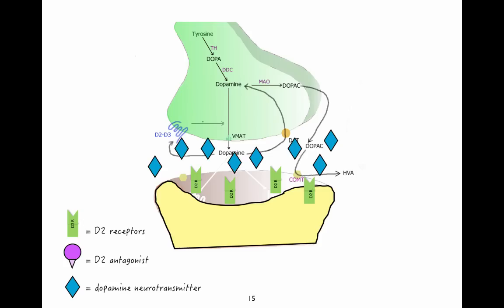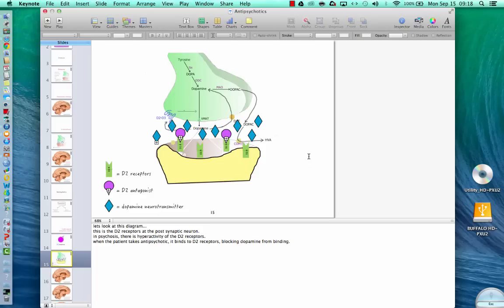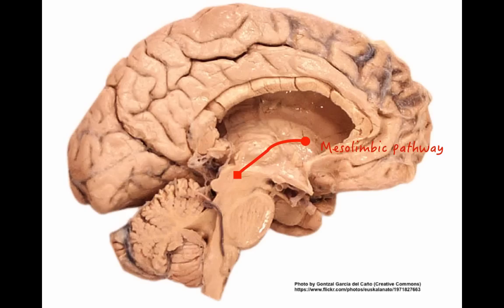Let's look at this diagram. These are the D2 receptors at the post-synaptic neuron — those are the light green squares. In psychosis, there is hyperactivity of dopamine, as you can see in the blue diamonds in the synaptic cleft. So when the patient takes an antipsychotic, it binds to the D2 receptors, blocking dopamine from binding to them. When that happens in the mesolimbic pathway, it would reduce the positive symptoms.